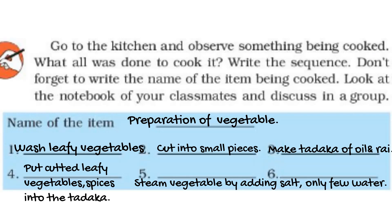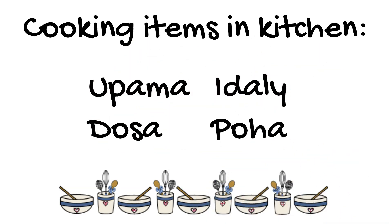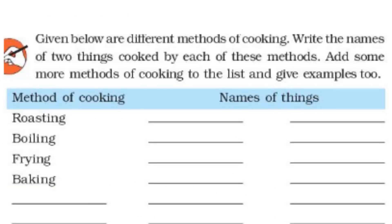We wrote the steps for how to cook leafy vegetables. Now we are going to list the food items we have seen being cooked in the kitchen — upma, idli, dosa, and poha. You can write your own items also. We can see that there are roasted, baked, boiled, and fried food items. We are going to list which items fall into each category.